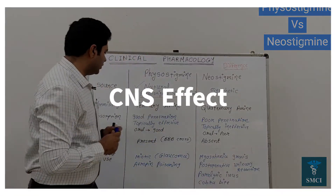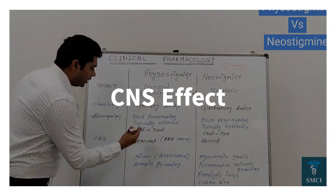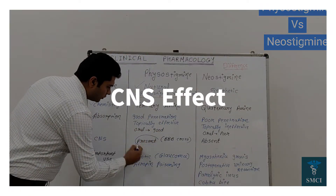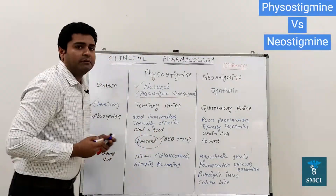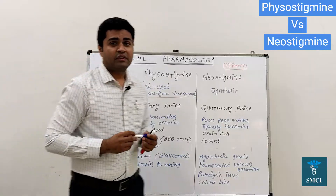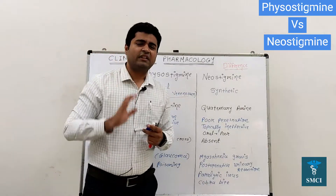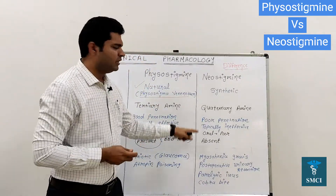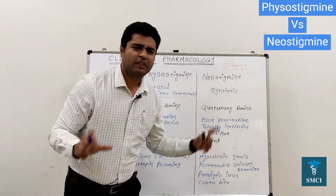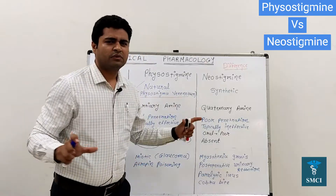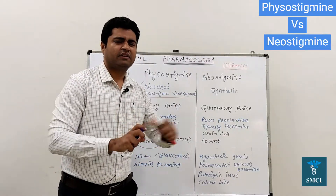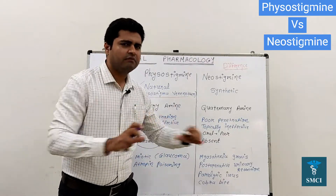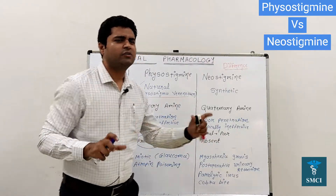Physostigmine can also cross the blood-brain barrier, so its CNS effects are present. While neostigmine does not penetrate the blood-brain barrier, so its CNS effects are very minimal or absent.